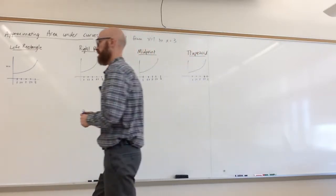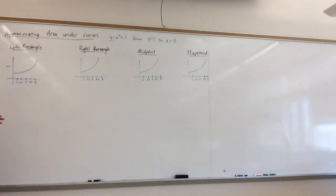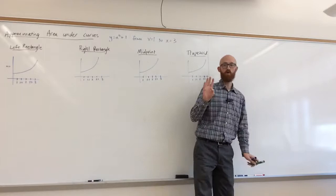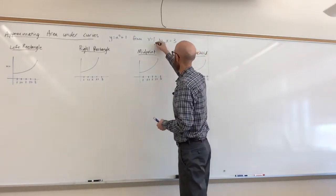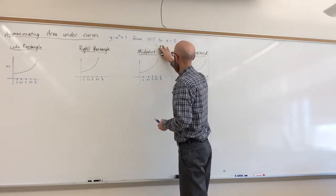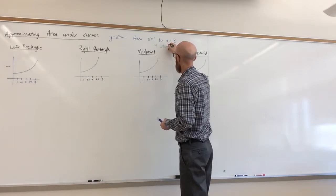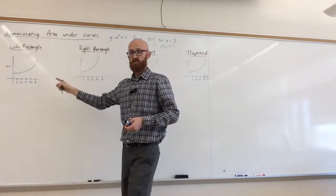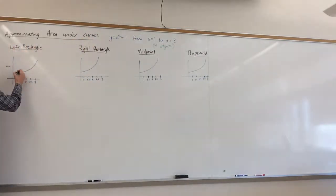The first approximation method is with left-hand rectangles. What I mean by left-hand rectangles is we're going to put four rectangles. Every time, actually I should note, we're going to use four objects. So in this case we'll use four rectangles. And when I say left-hand, the height of the rectangle is going to be determined by where its left side meets the curve.